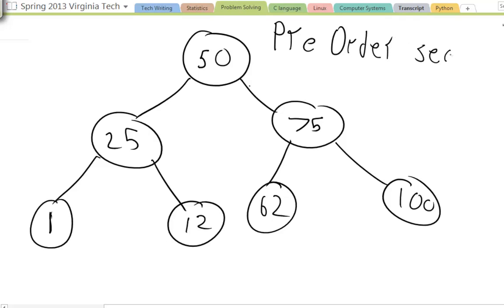Tree traversals are a way in which you visit each node once in a systematic way. Each pre-order, post-order, and in-order has a different systematic way of visiting the nodes.